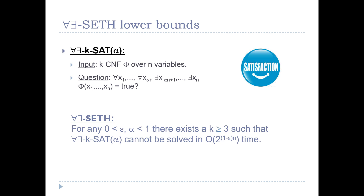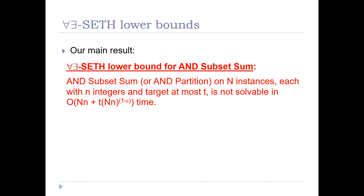This is a weaker assumption than SETH because it implies SETH, but we believe it is almost as plausible. We can now state the main result: a tight lower bound for N-subset sum under the ForAll-Exist SETH. This lower bound states that N-subset sum (or N-partition) on N instances, each with n integers and target at most T, is not solvable in O(N*n + T * N * n^{1-epsilon}) time for any epsilon > 0.